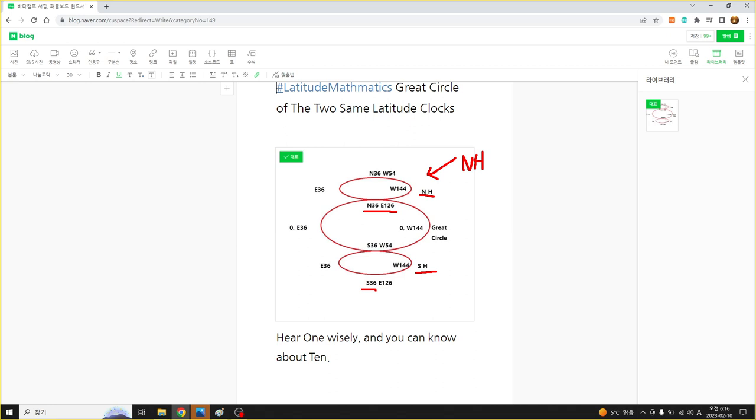South 36, East 126. The other side of Southern Hemisphere, South 36 West 54 is about Uruguay, South America.